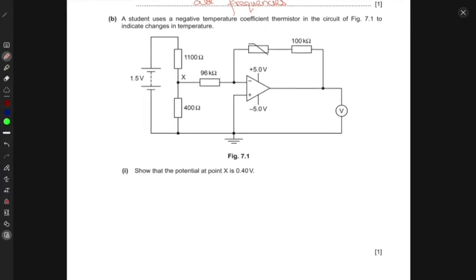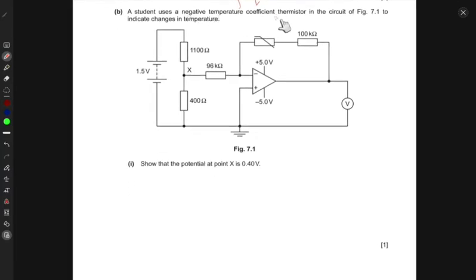Next, a student uses a negative temperature coefficient thermistor in the circuit to indicate changes in temperature. Here we have a circuit with a battery, resistors, and operational amplifier. This is the thermistor. We have another resistor and a voltmeter V. We want to show that the potential at point X is 0.40 volts.